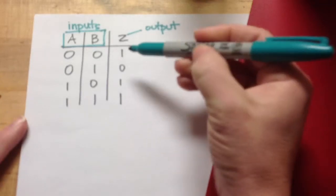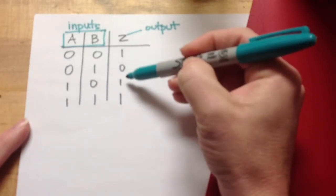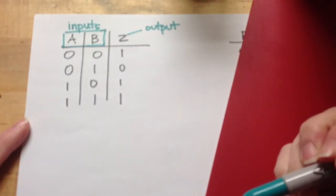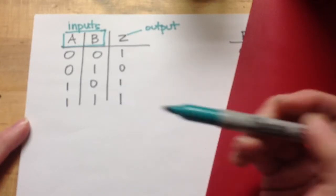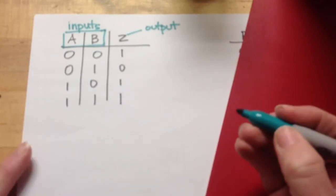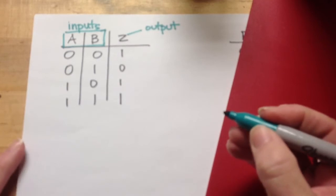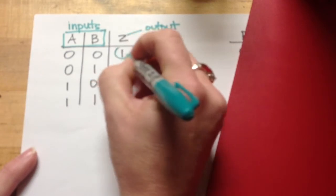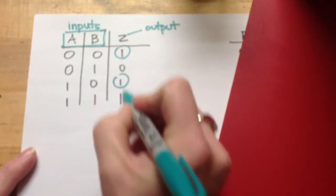And everywhere there is a 1 means that for whatever reason, the output of my circuit would be true. So I have to identify, if I want to be able to write the logic expression for this, I'm going to have to write this term, this term, and this term.